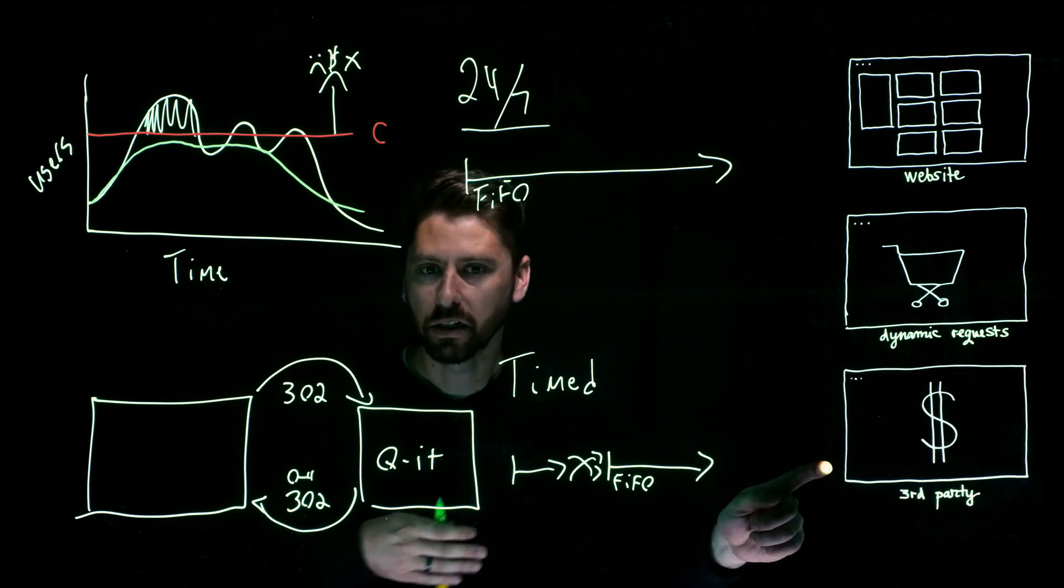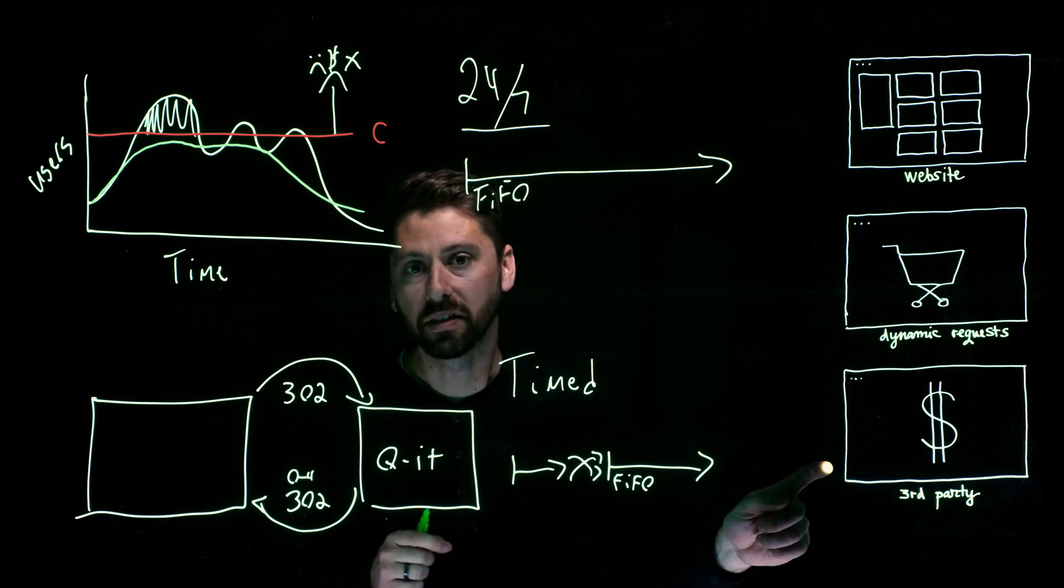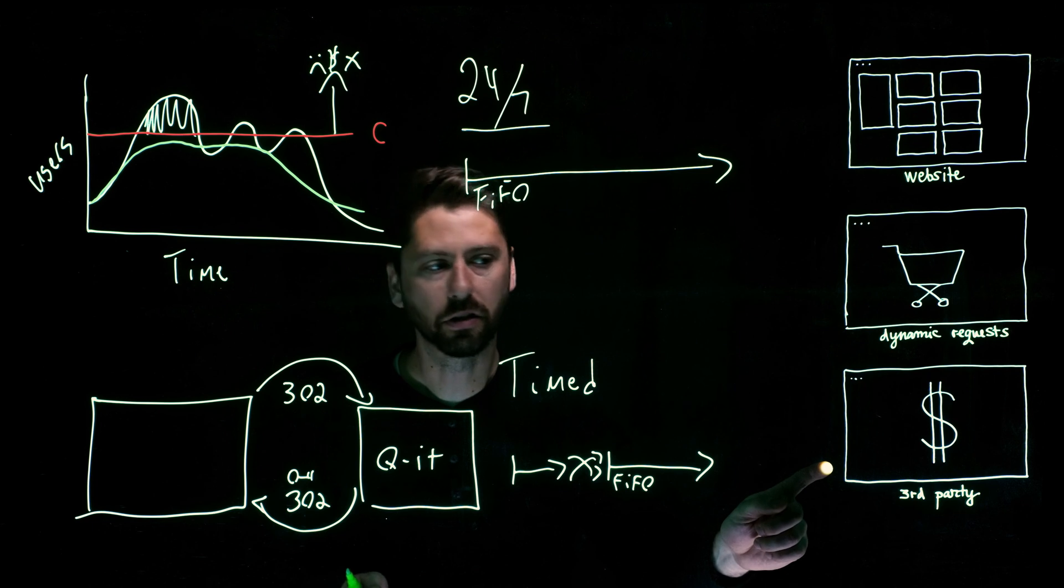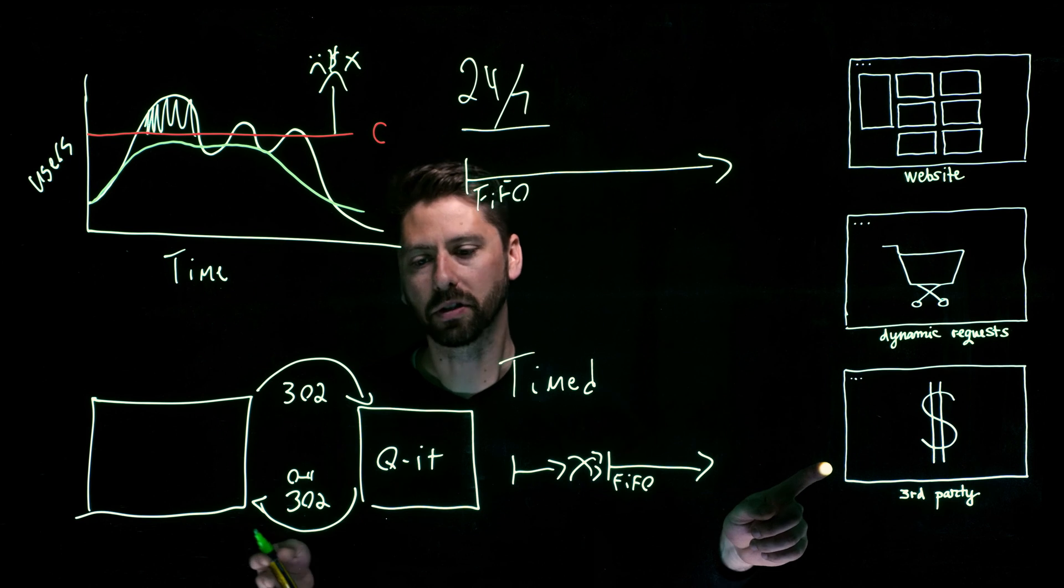The last thing is protecting the flow into third party applications. Payment gateways is the main one that we see here, but there's tons of third party applications that can cause bottlenecks in your user journey. This allows you to protect that and give a good user experience while allowing the rest of your site experience to be as normal.